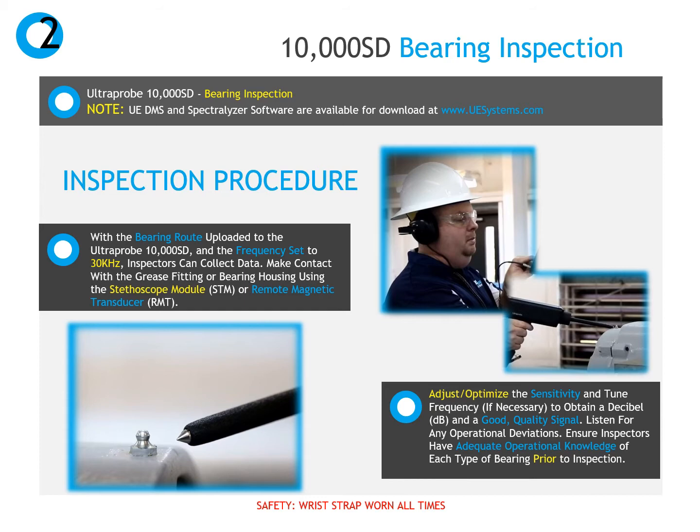To begin data collection, make contact with either the stethoscope or magnetic modules on the grease fitting or bearing housing. Do not push down on the Ultra Probe — allow the weight of the instrument to rest on the test point for consistency. Next, adjust the sensitivity by turning the sensitivity dial to the left or the right until a dB value and good quality audible signal is heard through the headphones.